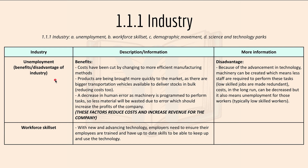For unemployment, we have the benefits and disadvantages of industry. For the benefits: costs have been cut by changing to more efficient manufacturing methods; products are brought more quickly to market as there are bigger transportation vehicles available to deliver stock in bulk, which also reduces transportation costs; and there's a decrease in human error as machinery is programmed to perform its tasks, so less material is wasted, which should increase company profits.